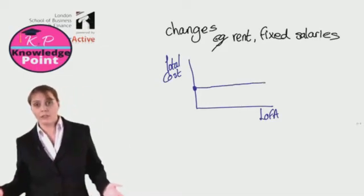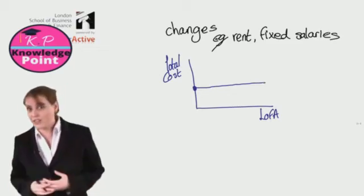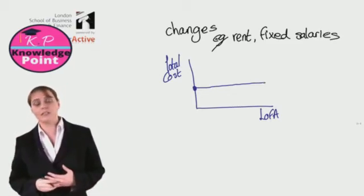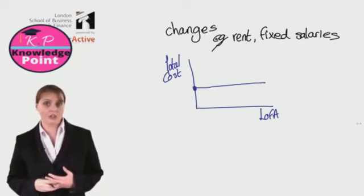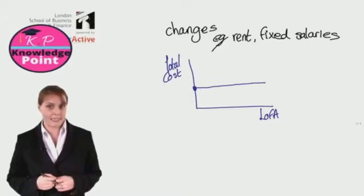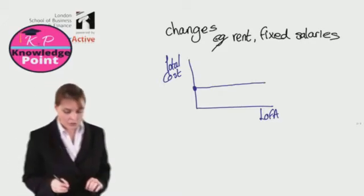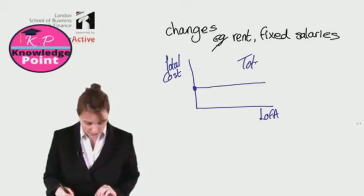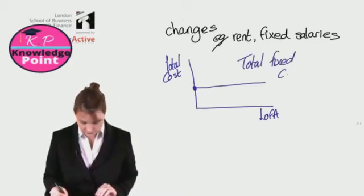So when our level of activity is zero, we are still going to have to pay for our fixed costs. As our level of activity increases, our fixed costs in total will stay at the same level, because our rent charge or our fixed salaries aren't going to change just because we've increased our production activity. So that's our total fixed costs.